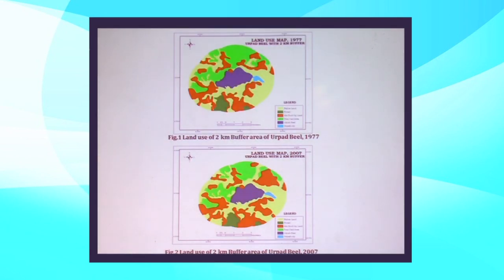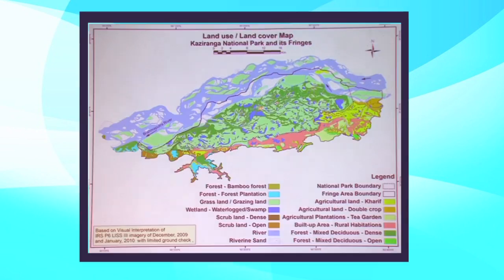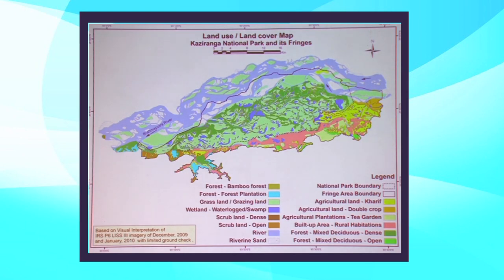By contrast, wetlands of the same type found in rural areas have not been affected the way Deepor Beel has deteriorated. Looking at Kaziranga National Park, the tall trees, grassland, and wetland are the best combination for rhino habitats. However, these wetlands are also affected because agricultural lands in fringe areas are extending toward the wetlands, and waste from tea gardens is being released into water bodies, deteriorating the water quality of Kaziranga National Park day by day.